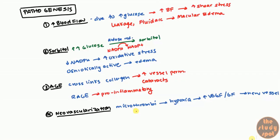New vessel formation itself is not the problem. However, the problem is that these new vessels are leaky. When they are leaky and especially when you have high blood flow going towards them, they tend to leak more easily because they can't handle the stress — it's like a newly formed vessel. So that is the general pathogenesis.